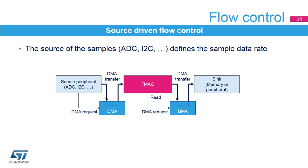Flow control can be source, sync, or filter driven. This slide describes the source-driven flow control sequence. The source of the samples — ADC, I2C, etc. — defines the sample data rate. The source requests the DMA or CPU to transfer data to the filter input buffer. The filter operates at a faster clock rate than 2N times the source sample rate. When the input buffer is empty, i.e., the next sample is not available, the filter stalls waiting for new data. When the output buffer is not empty, i.e., one or more samples are available, an output channel DMA request or interrupt is generated. The DMA or CPU transfers the output samples to memory or another peripheral such as DAC or PWM.